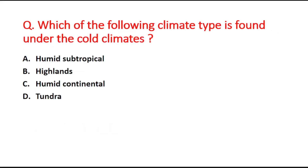Next question: Which of the following climate types is found under cold climates? Option A is humid subtropical, B is highlands, C is humid continental, and D is tundra. The right answer is option D, tundra.